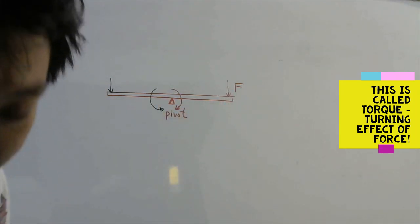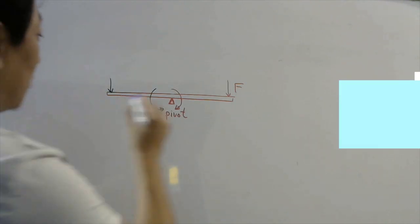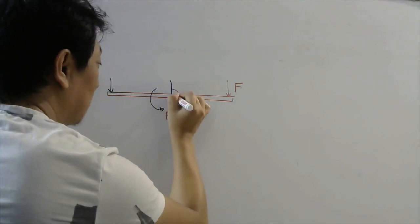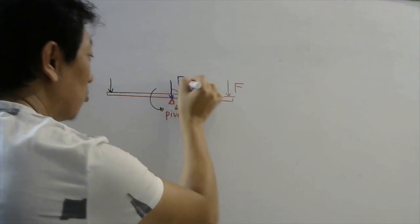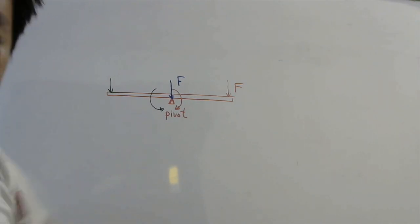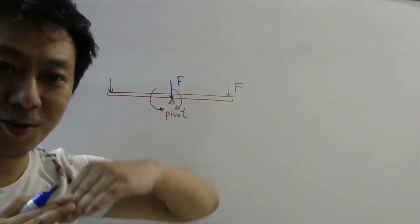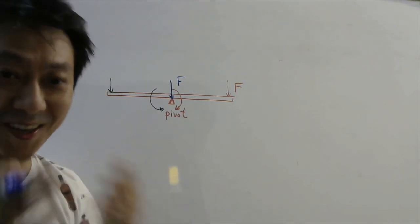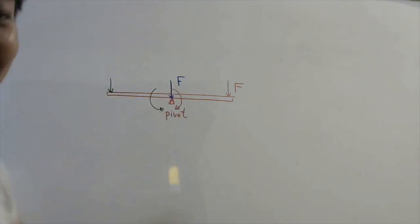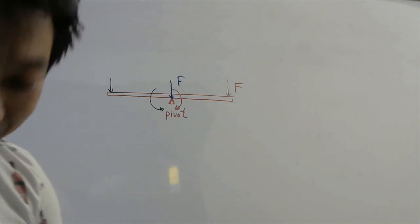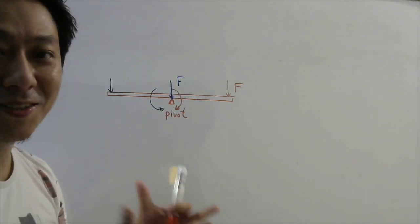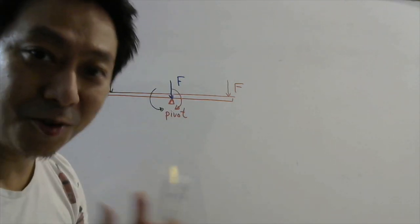What if the force is acting right at the pivot — meaning what if you sit exactly at the pivot point? Will the see-saw rotate? Obviously no. So keep these three things in your mind. Let's now apply this to the demo we did.